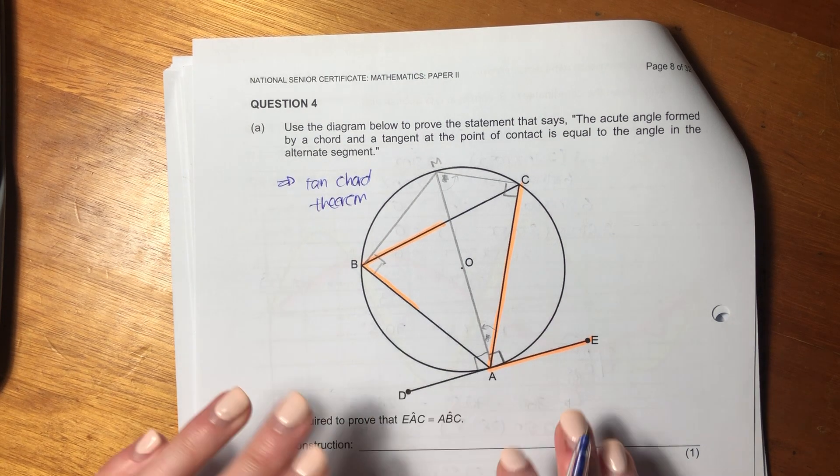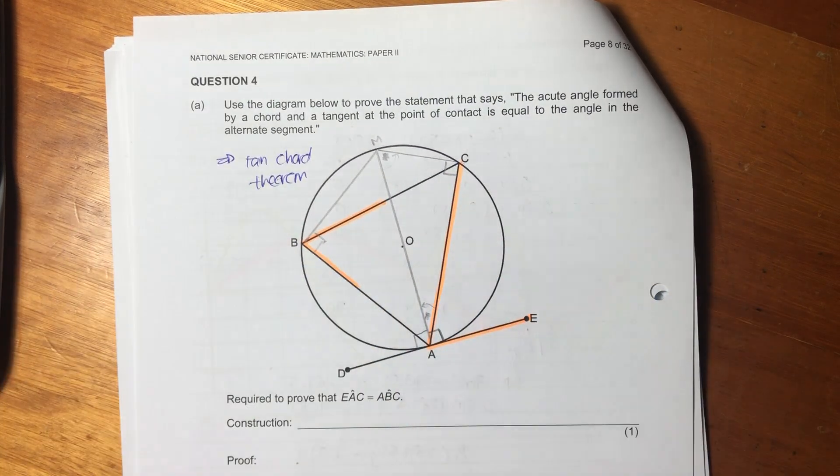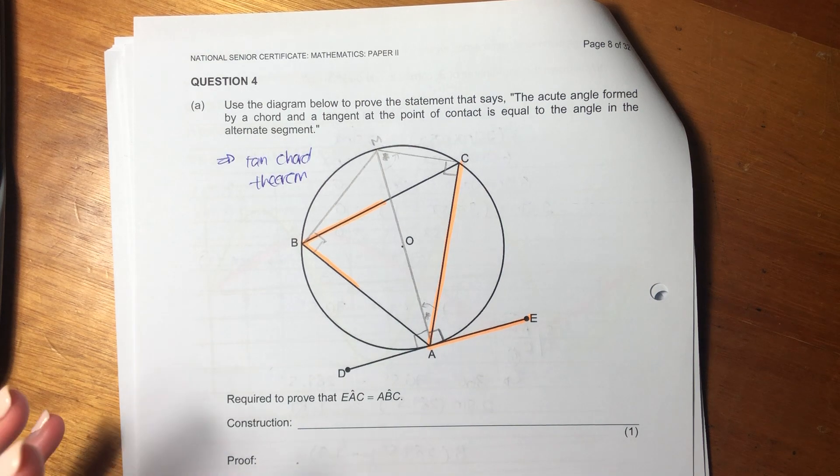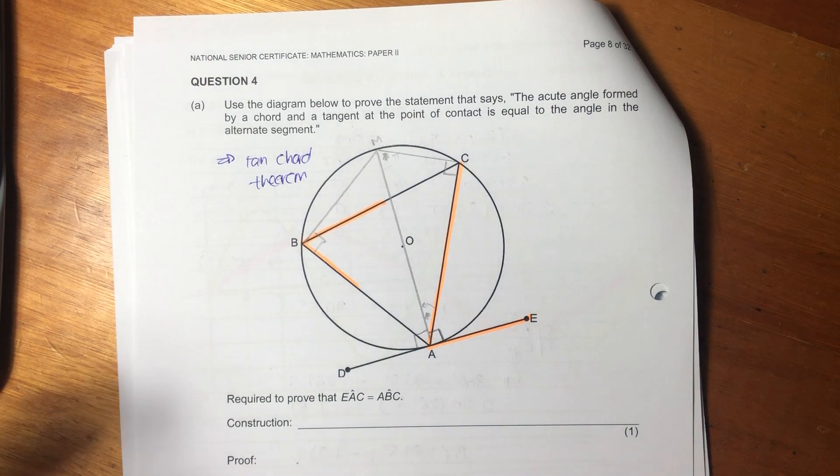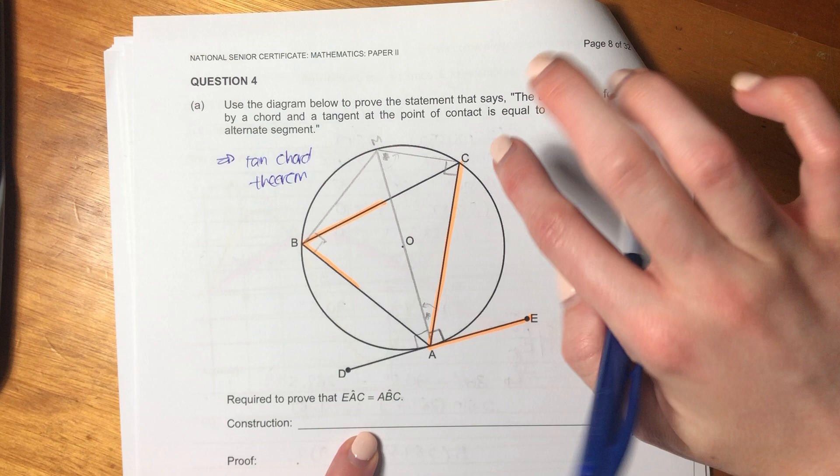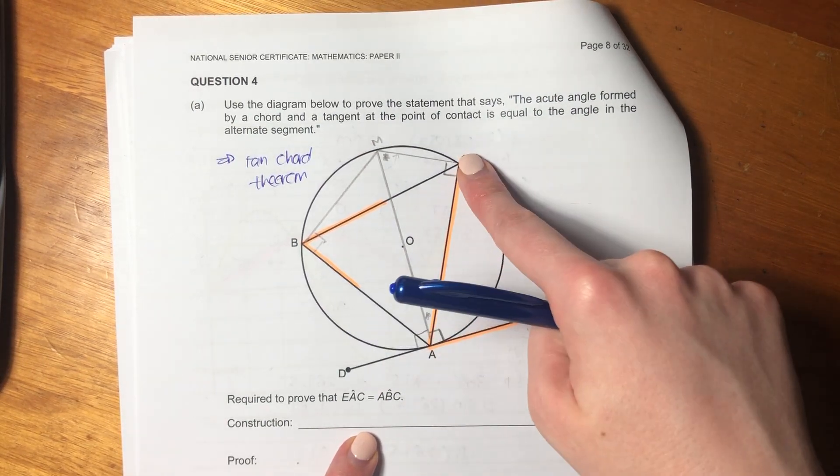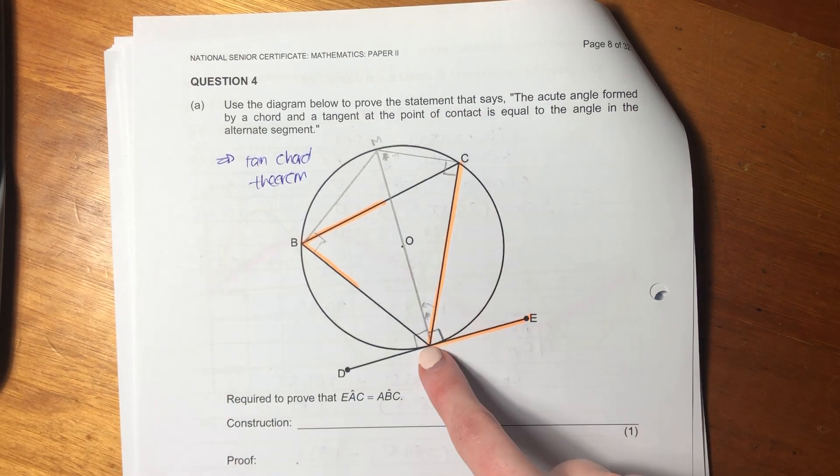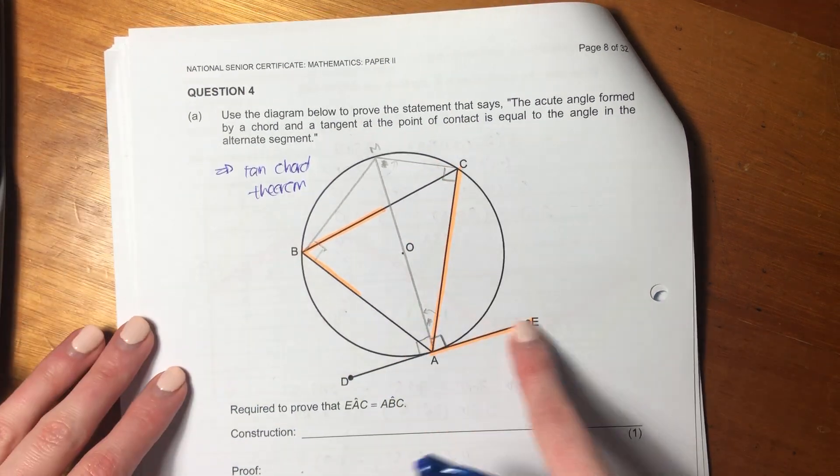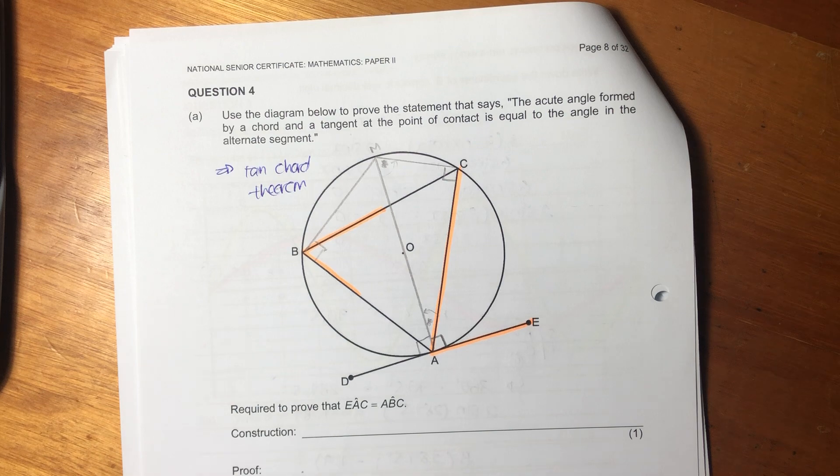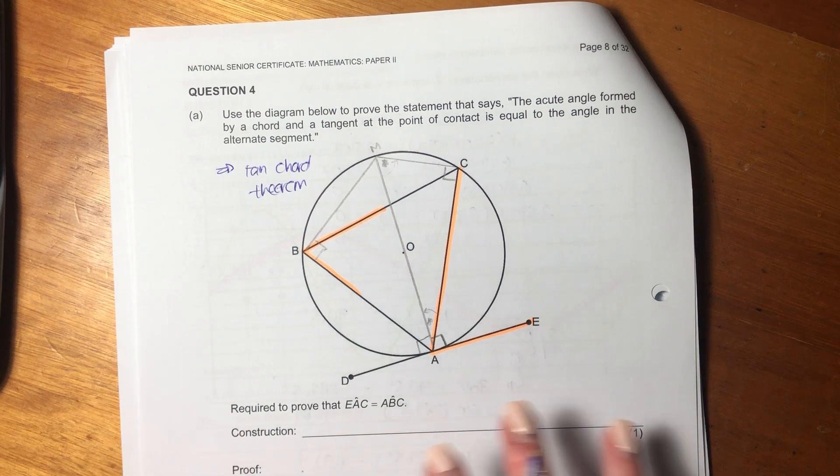So it took me a little bit of time to figure out what was going on here. But what we're trying to fundamentally prove is that this angle here that I've highlighted in orange, EAC, is equal to ABC. So this guy is equal to that guy. Now, in order to prove that, we need to draw on a construction.